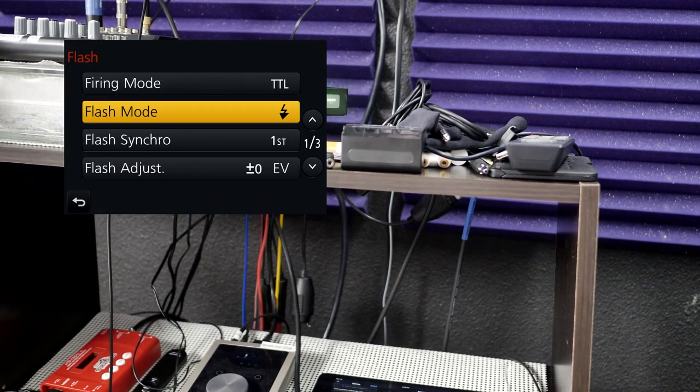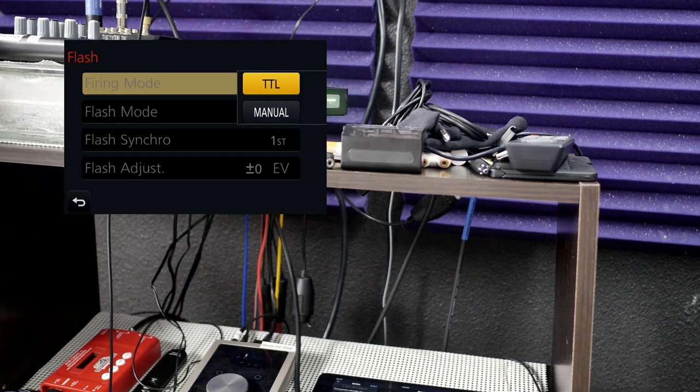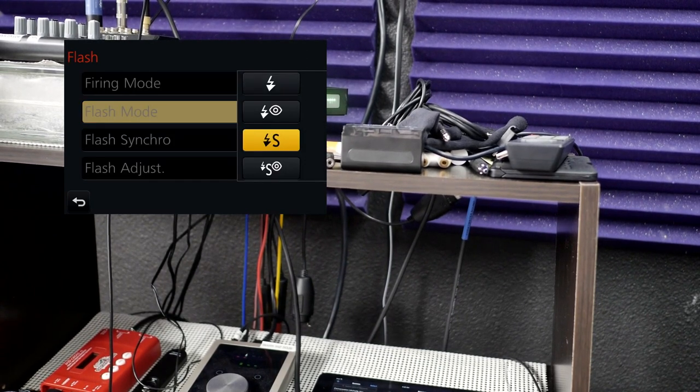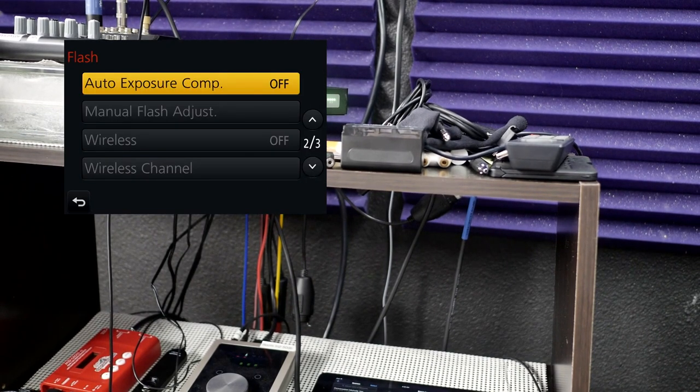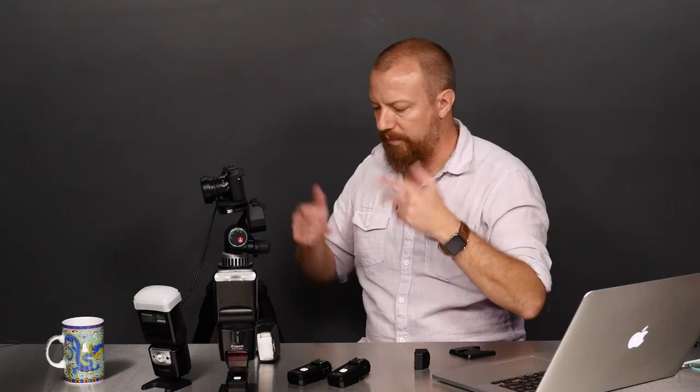Let's take this flash off for a moment. Go into the menu system under the camera settings, then flash. You'll see firing modes, TTL or manual, flash mode whether it's regular flash, red eye, slow shutter, or red eye on a slow shutter. You scroll down to the next page and you'll see there's a wireless option, but it's off and I can't get to it. It's grayed out.